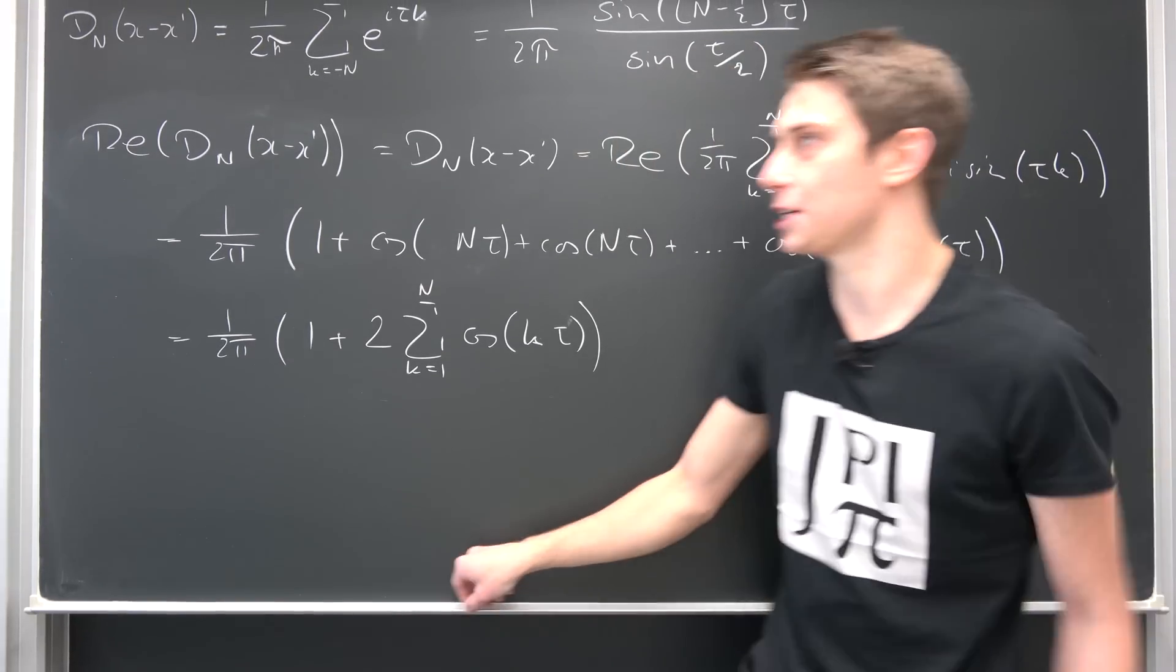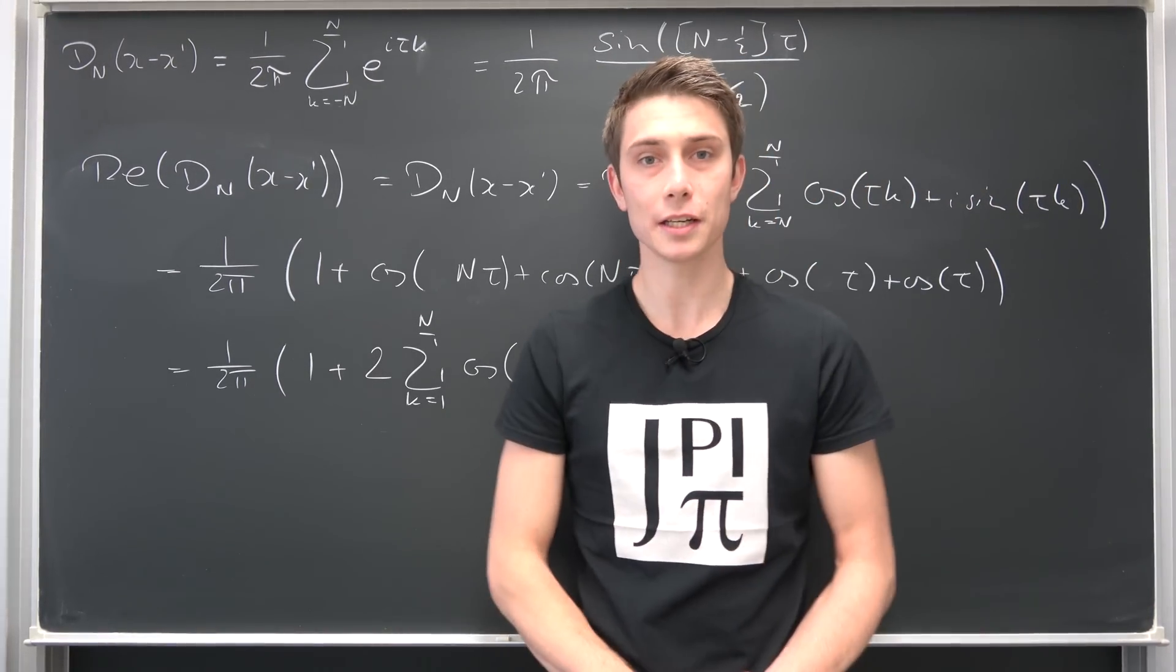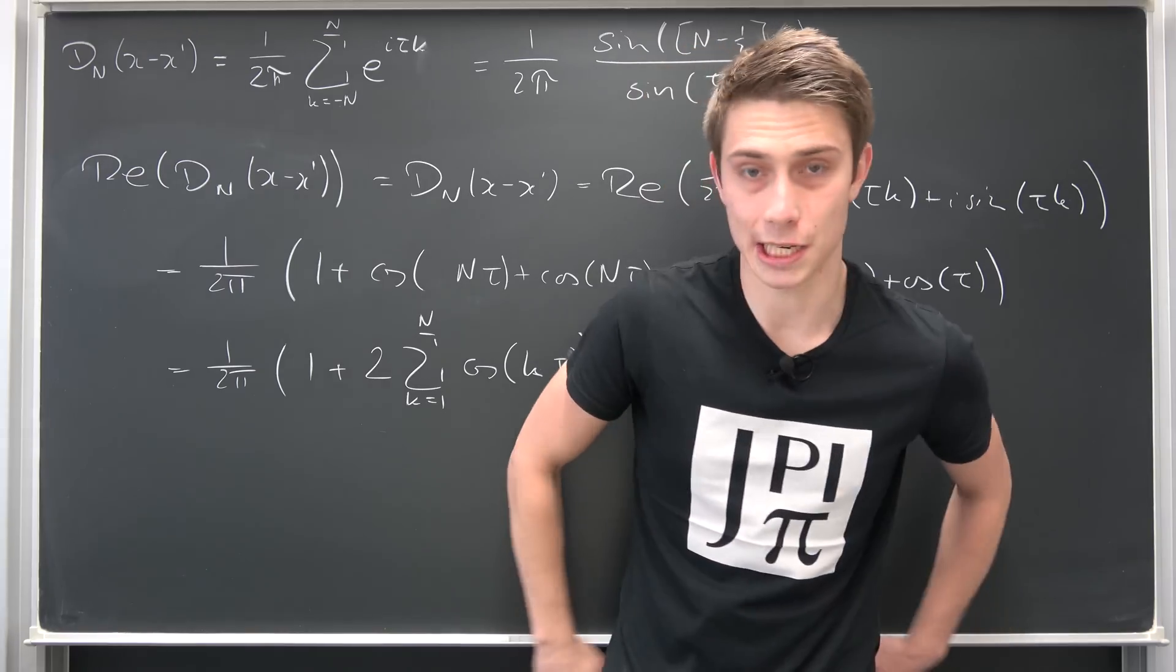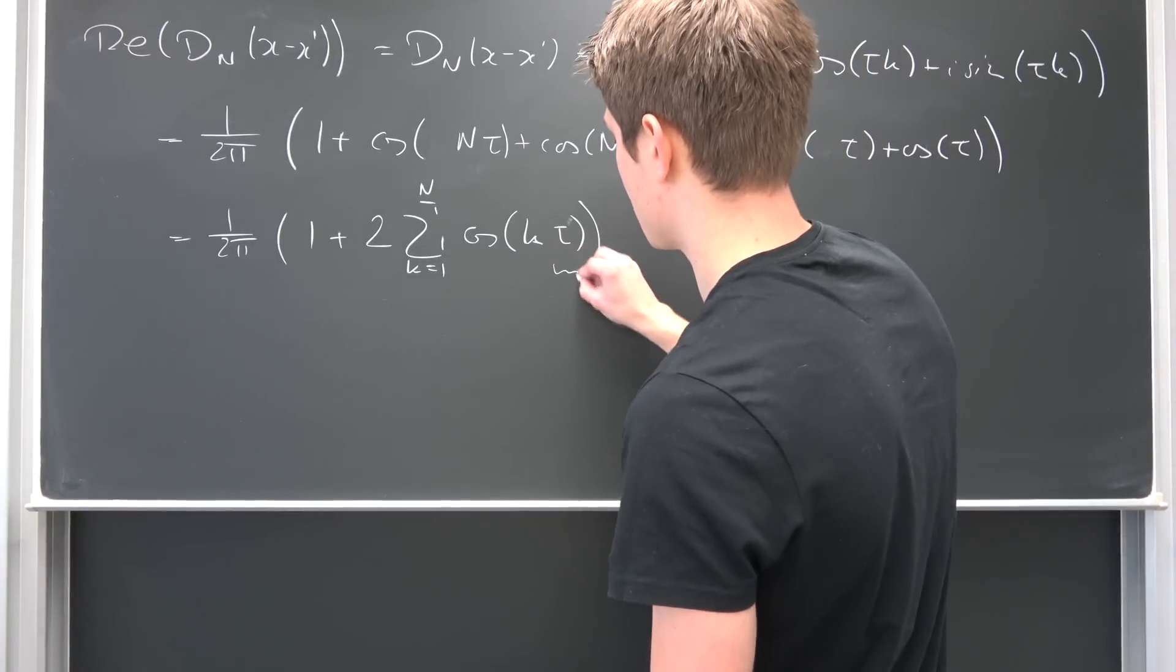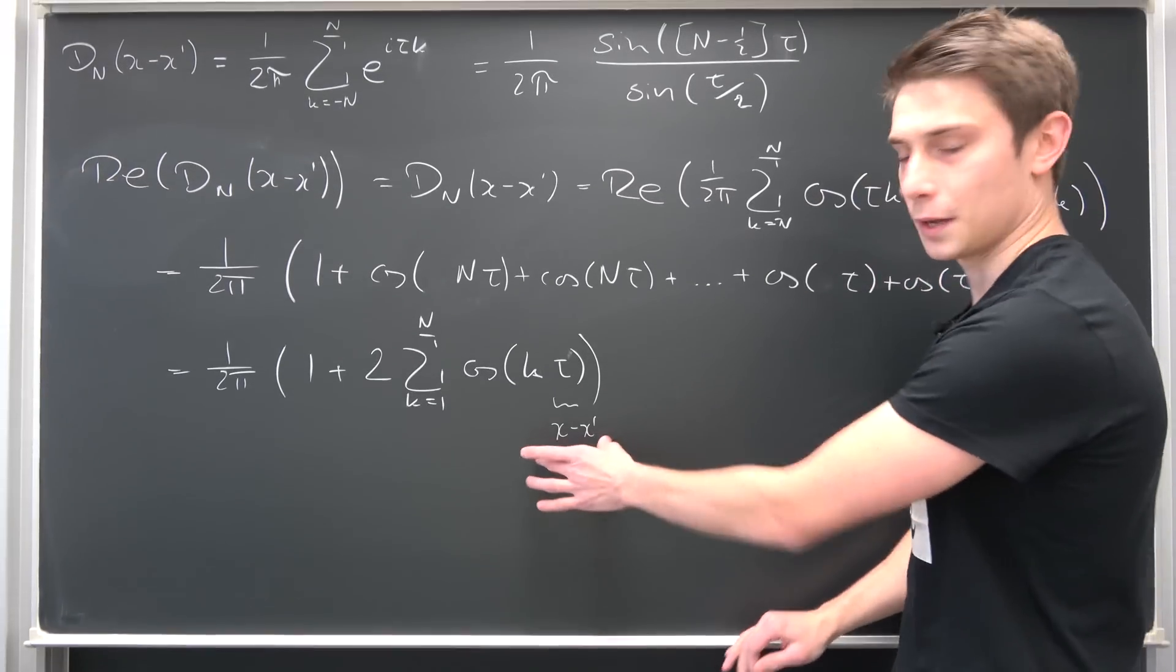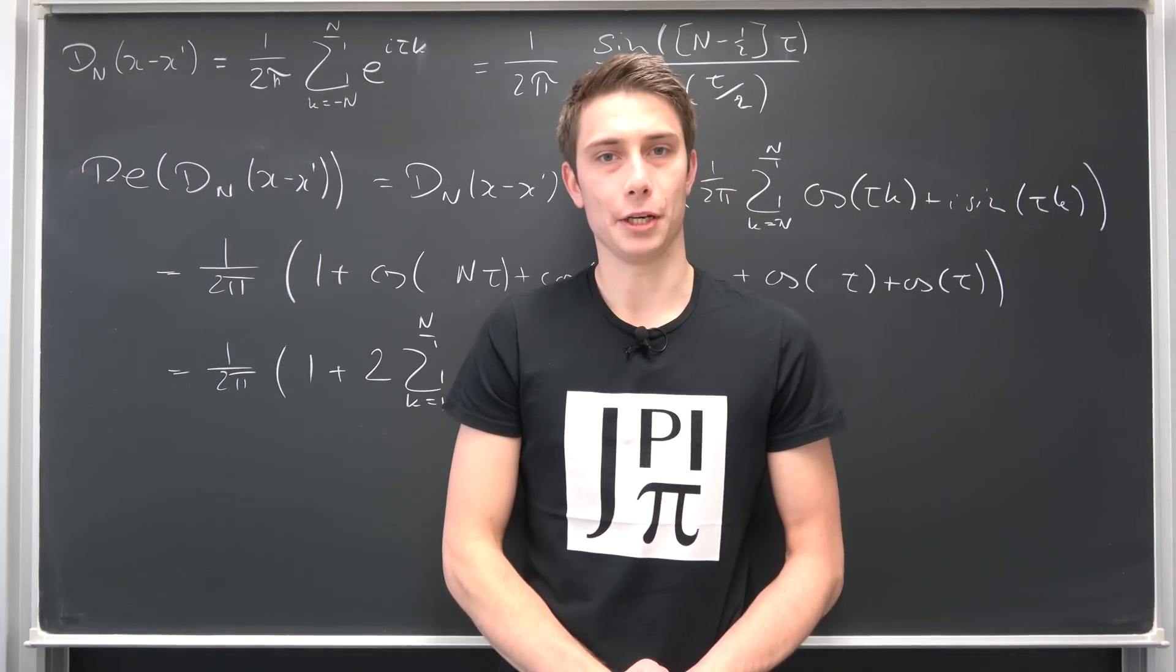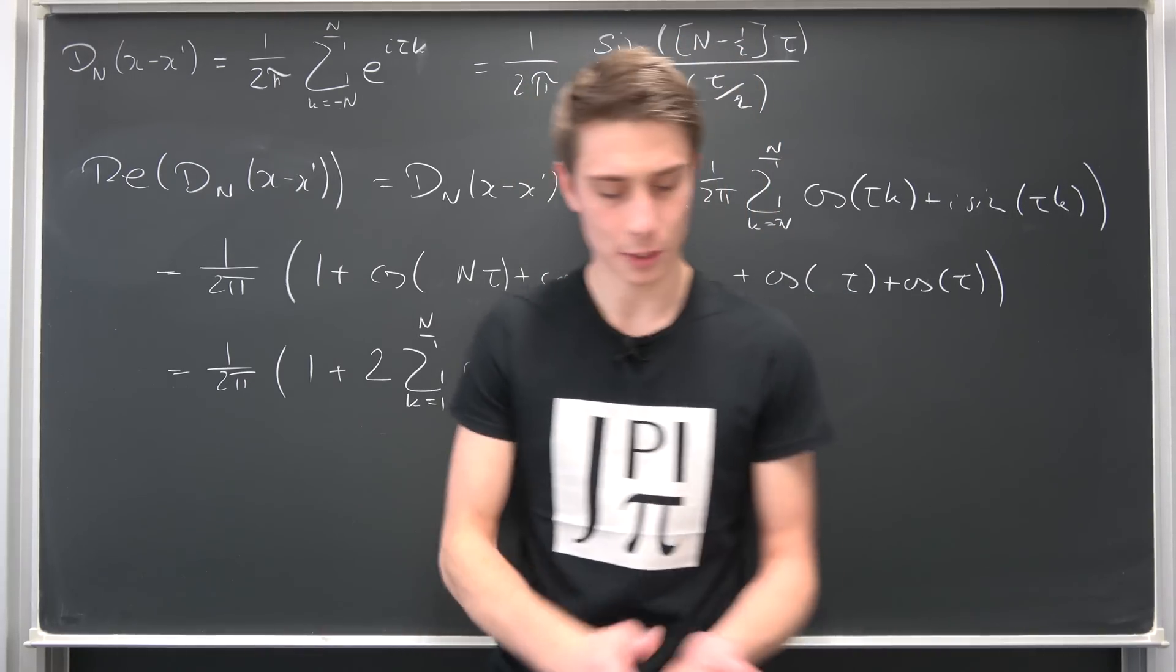This right here is another formulation of the Dirichlet kernel, and I'm going to make use of this bad boy right here to derive the Dirichlet kernel in the very next video. Because you see, just as a matter of fact, tau is nothing but x minus x0, just like proposed. And maybe you already know where this is going. If you don't, it's not a problem. I'm going to talk about it soon.